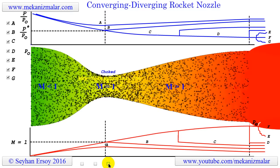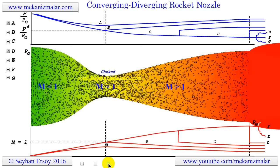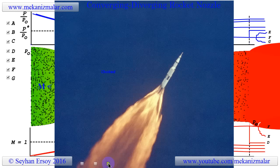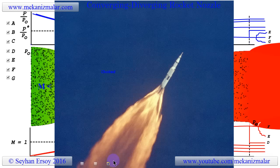This flow pattern is called under-expanded flow and can be seen in the Apollo 6 test flights in this image.